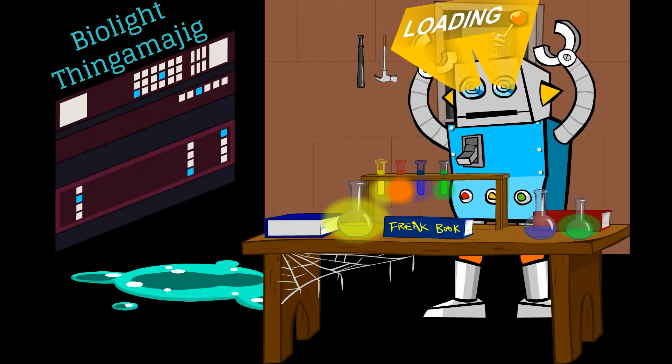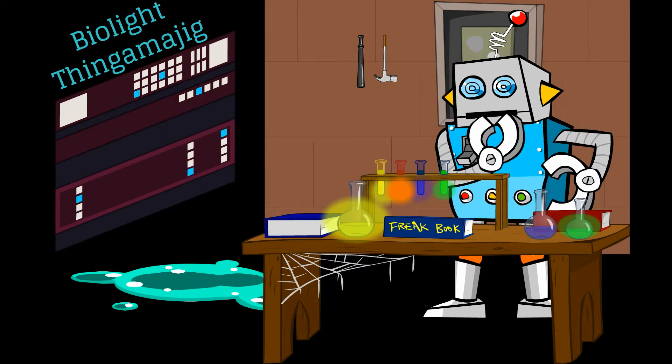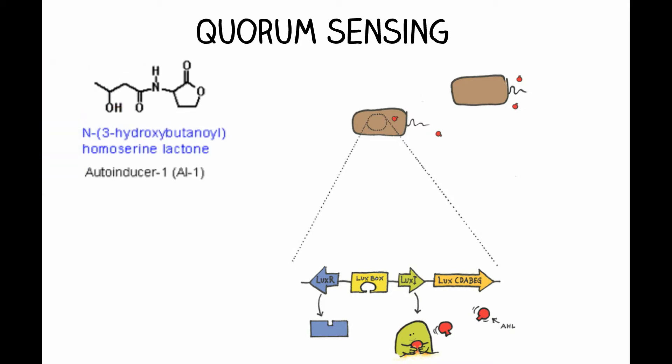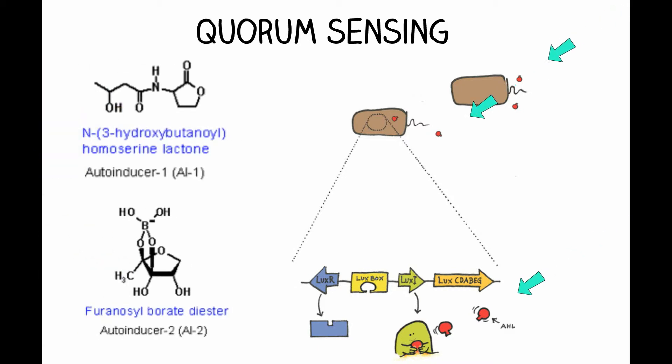What does the machinery behind bioluminescence in Vibrio harveyi look like? It all starts with quorum sensing. When the population of bacteria is sparse, metabolic products—autoinducers 1 and 2 in harveyi—are in low concentration in the environment.